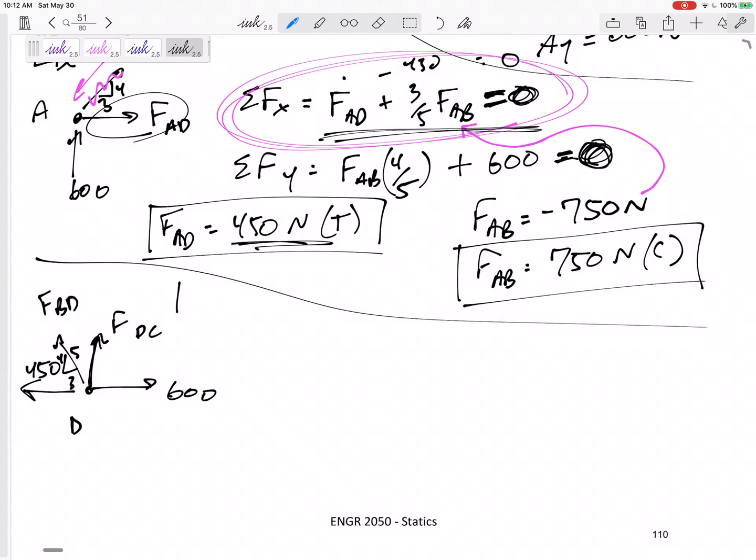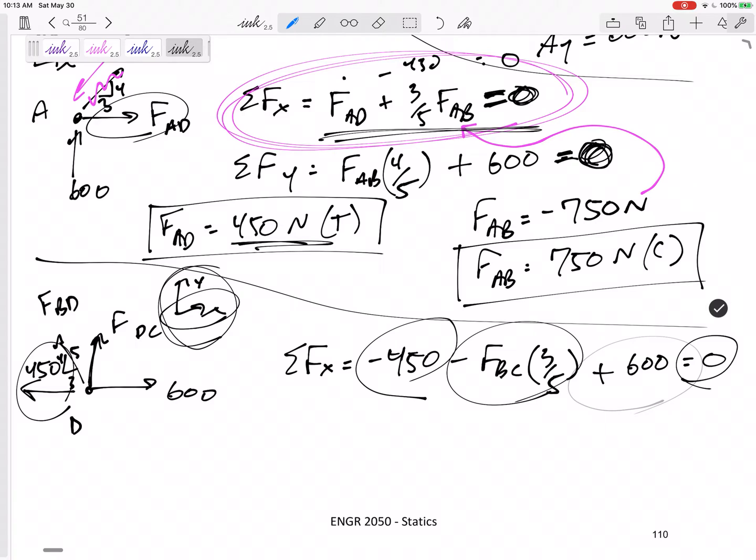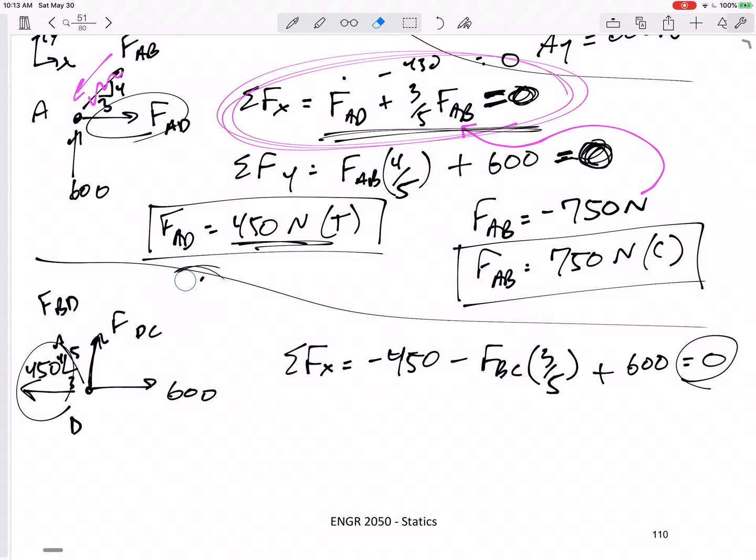And I'm ready to sum the forces now. Maybe draw my axes again. Now, that 450, it's in tension. In general, tension I think about as positive. But when I'm summing the forces, remember, sum the forces according to axes. So this is 450 to the left, so minus 450. FBD is to the left, the 3/5 component is to the left, plus 600 is to the right and equals to zero. This is just an equation that equals zero. You can define anything you want to be positive or negative, as long as you stay consistent. Draw your axes. Stay consistent with your axes. I'm defining X and Y right here.